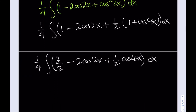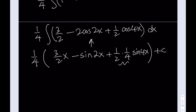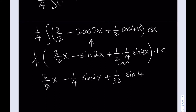Now everything is in the first power, so we integrate. The integral of 3 halves is 3 halves x. The integral of cosine 2x is sine 2x over 2. The integral of 1 half cosine 4x is 1 eighth sine 4x. Distributing the 1 fourth out front, the final answer is 3 eighths x minus 1 fourth sine 2x plus 1 thirty-second sine 4x plus c.